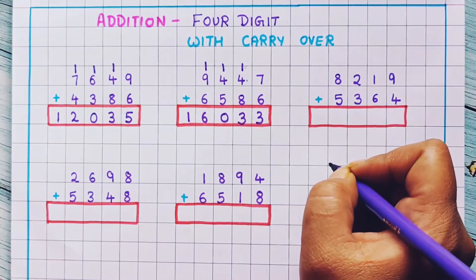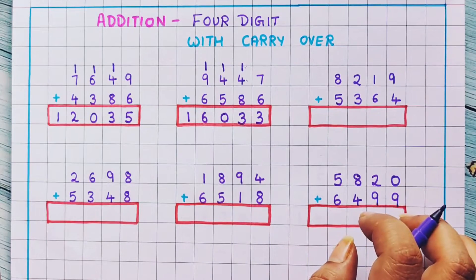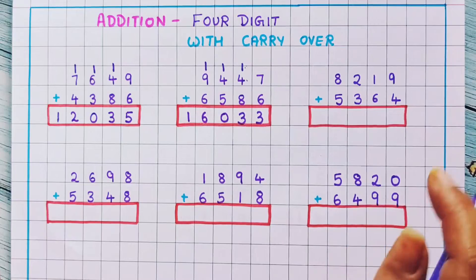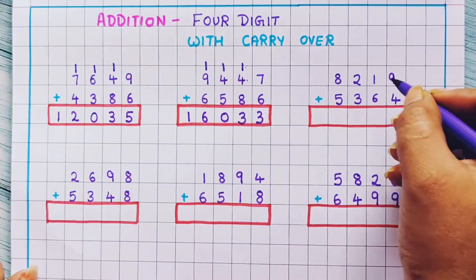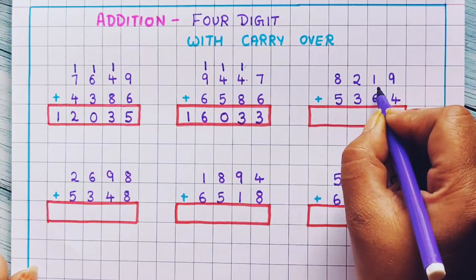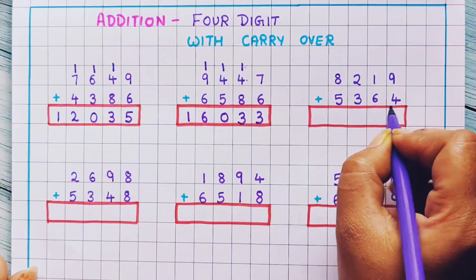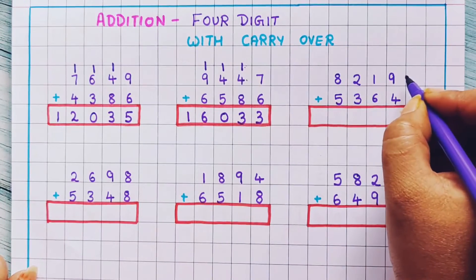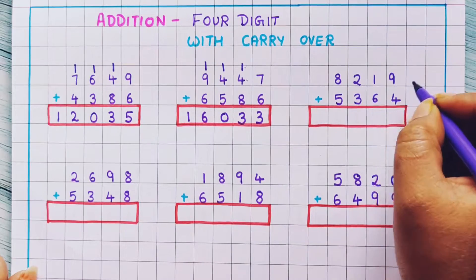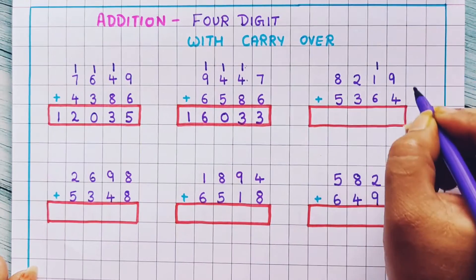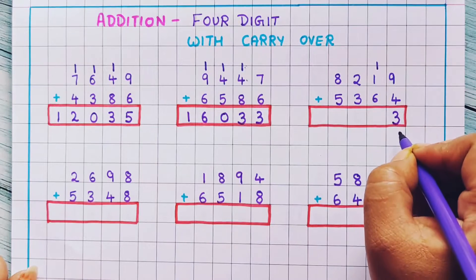I hope you are understanding this. Once you practice these problems, they will be very easy for you. So don't worry, let's do the next problem. 8219 plus 5364. Now 9 plus 4 is 13, so here I am writing 1 and 3.